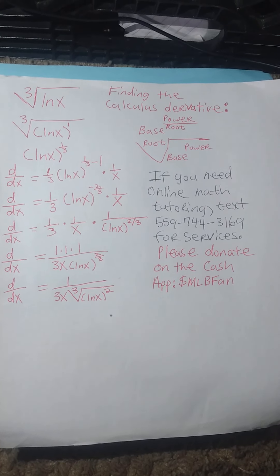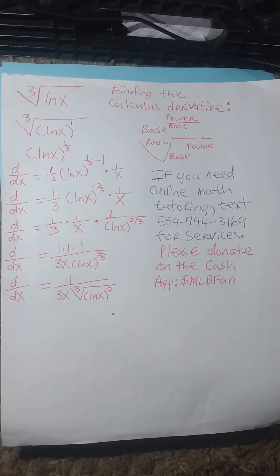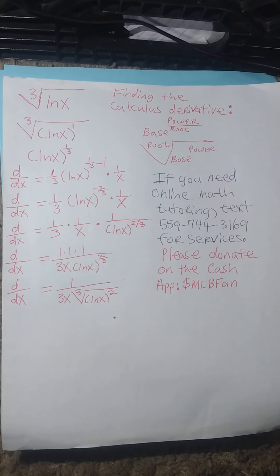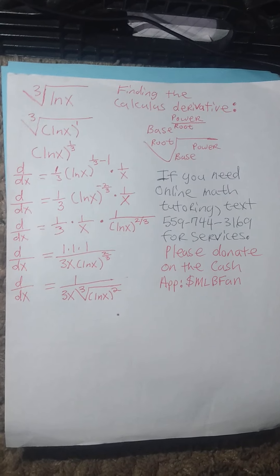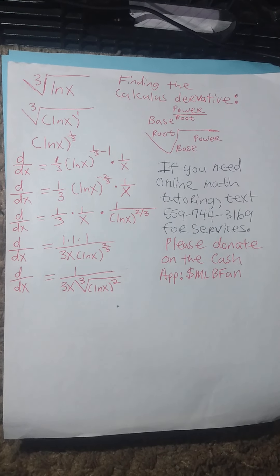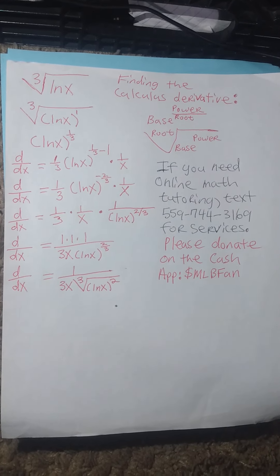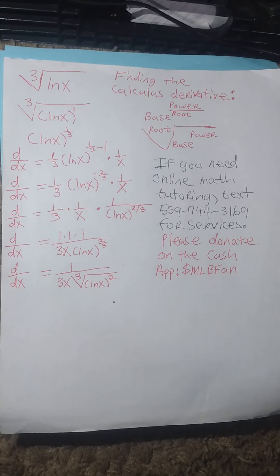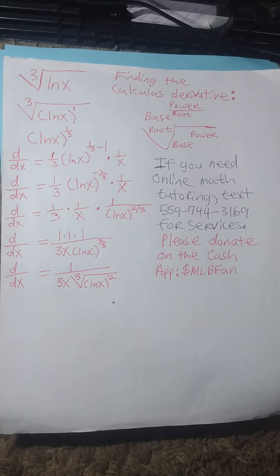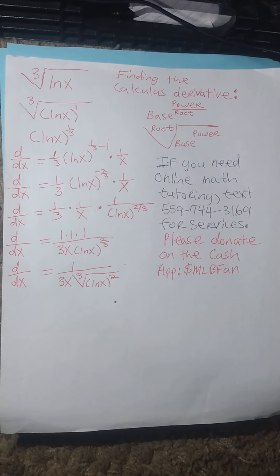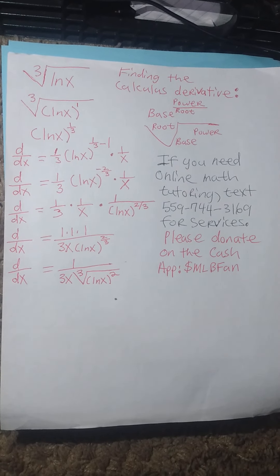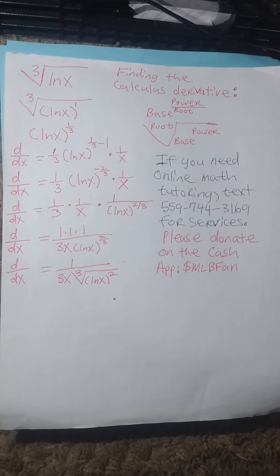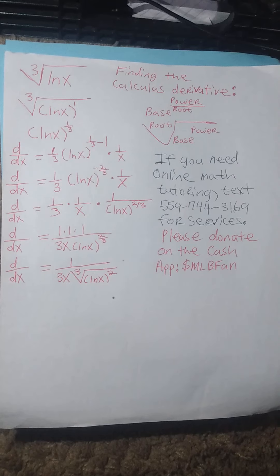So we bring the power down of 1/3, then it becomes 1/3 times the natural log of x to the 1/3 minus 1, times the derivative of the inside. And the function that is inside the parentheses is natural log of x. So the derivative of this function is 1 divided by x.